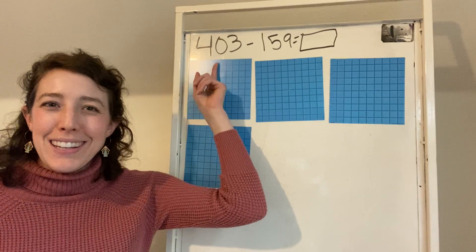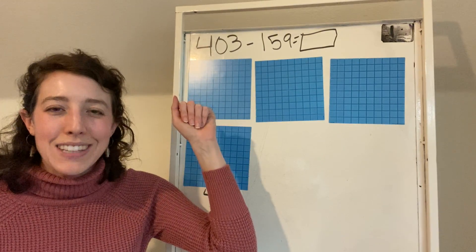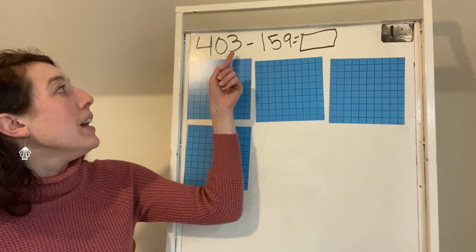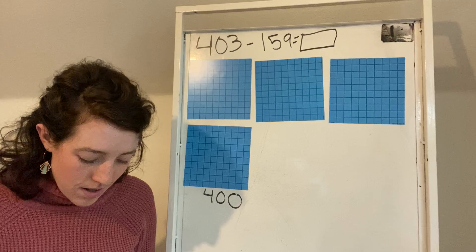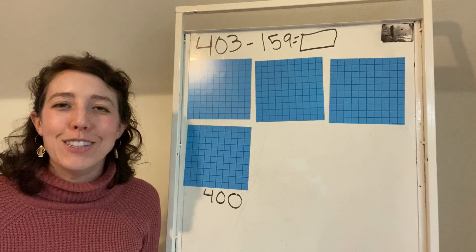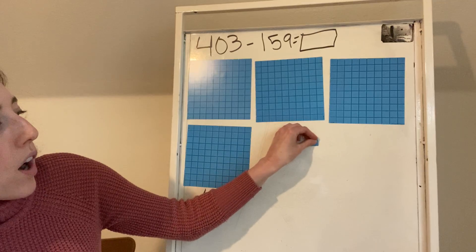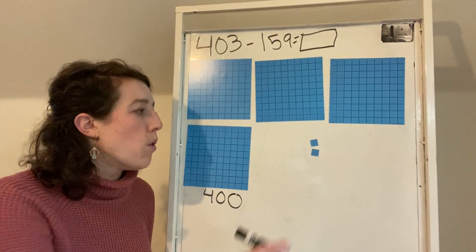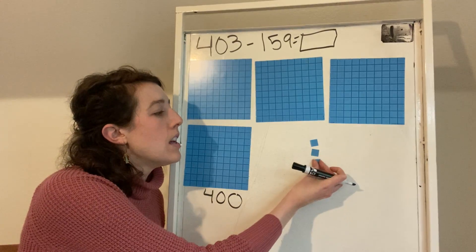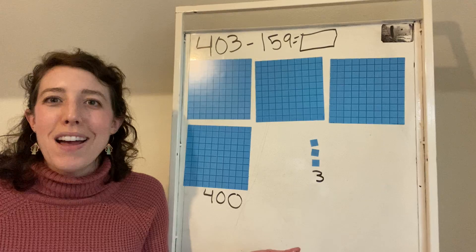So if I look at my tens place, there's a zero in my tens place. So I don't have to count out any tens, but I have three ones. So count out my ones with me. I'm at 400. Now I have 401, 402, 403. But I'm just going to write three to show that I have three ones.